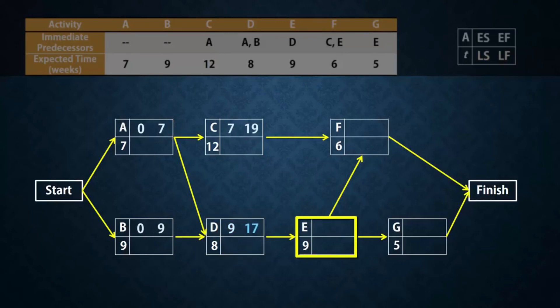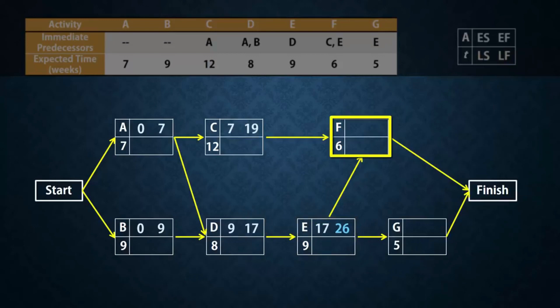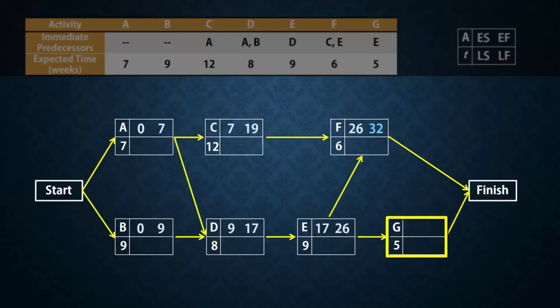E has only one predecessor D, and so can start at 17, and finish earliest at 26. F has predecessors C and E. Since the higher earliest finish time is 26, F can start earliest at 26, and finish at 32. G also can start earliest at 26, since it has only one predecessor E, and G can finish earliest at 26 plus 5, which gives 31.